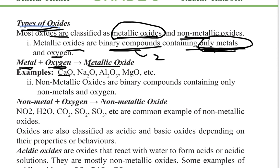Examples of metallic oxides: calcium oxide — calcium is a metal. Sodium oxide — sodium is a metal. Aluminium oxide — aluminium is a metal. Magnesium is a metal. Metal plus oxygen gives a metallic oxide.